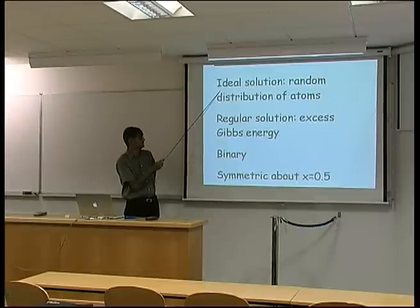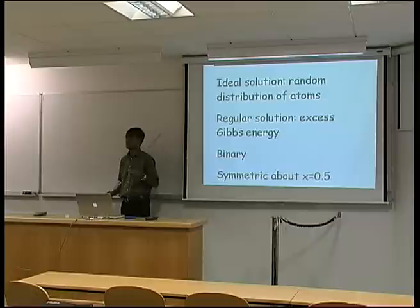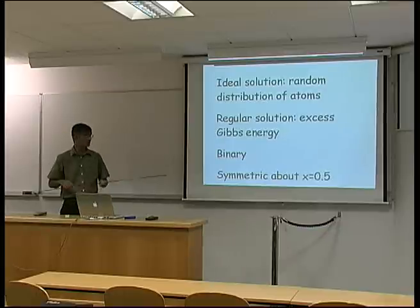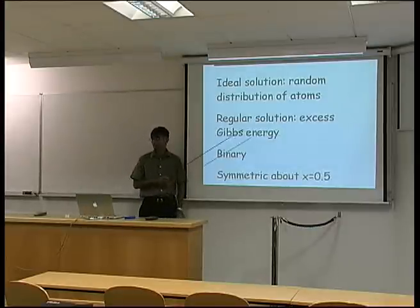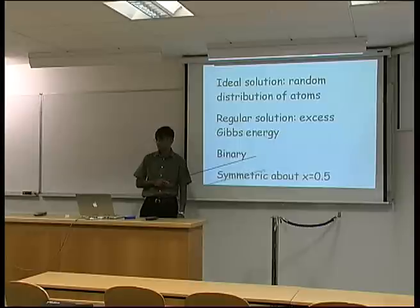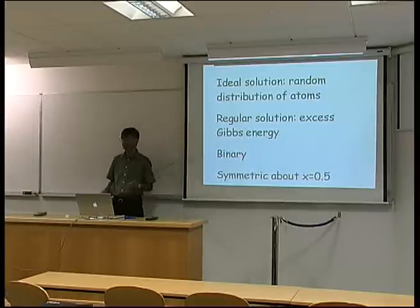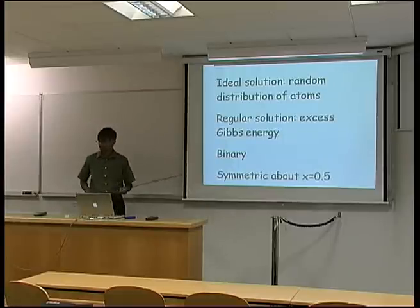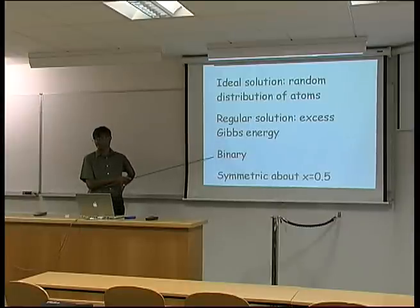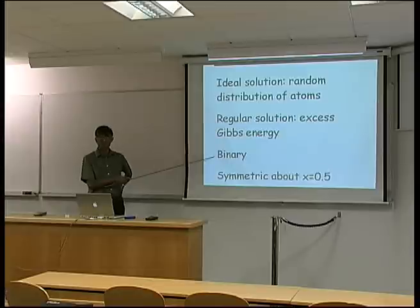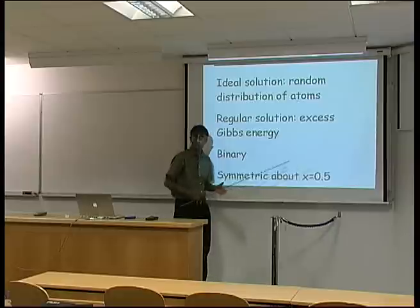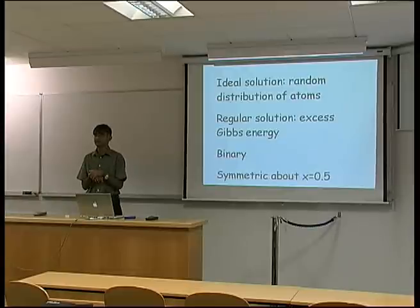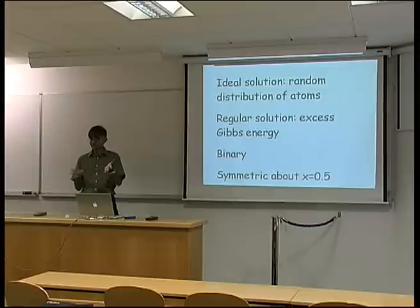So just to summarize, in an ideal solution we assume correctly that there is a random distribution of atoms because there is no change in binding energy when we mix different species of atoms together. In a regular solution we drop that assumption and we have a finite entropy of mixing which contributes to this excess Gibbs free energy. Nevertheless, we make the approximation that the atoms are distributed at random and that clearly is not correct. And so far we've only dealt with binary solutions, mixtures of A and B, rather than A, B, C, D etc. And we have all our functions symmetrical about x equals 0.5. And again that's not what happens in reality. The free energy curves have more complicated shapes than being symmetrical about 0.5.